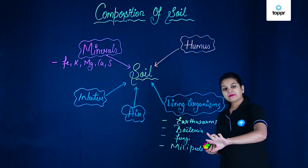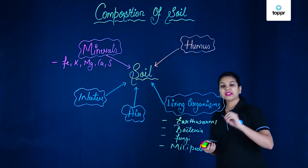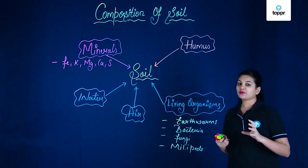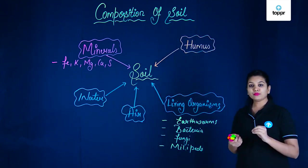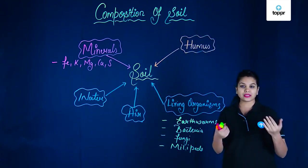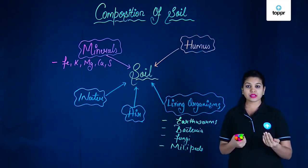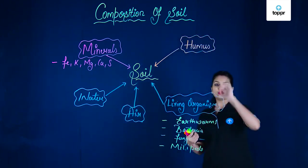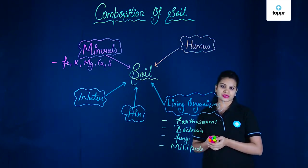Now coming to bacteria and fungi, we see that these are the main decomposing organisms which are present in the soil. So they decompose the dead and decaying organic matter such as plants and animals and they convert them into humus. We know what are the uses now.